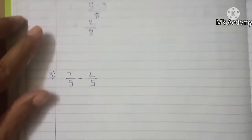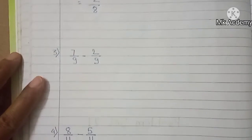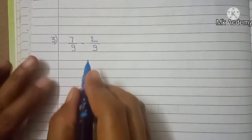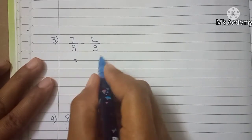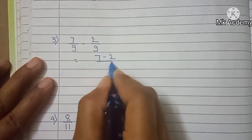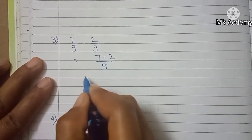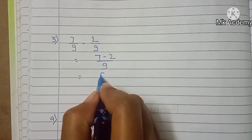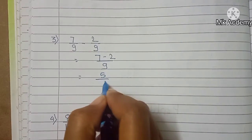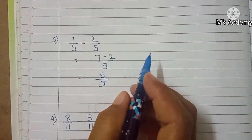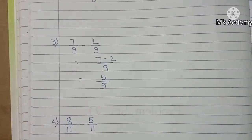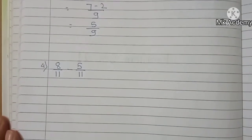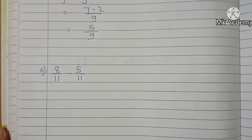Example 3: 7 upon 9 minus 2 upon 9. 7 minus 2 upon 9 equals 5 upon 9. Example number 4: 8 upon 11 minus 5 upon 11.